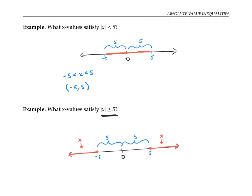Now I can rewrite the inequality without the absolute value symbols by saying that x is less than or equal to negative five, or x is greater than or equal to five. I could also write this in interval notation: soft bracket negative infinity, negative five, hard bracket, union, hard bracket five, infinity, soft bracket. I combine these with a U for union, because I'm trying to describe all these points on the number line together with all these other points.